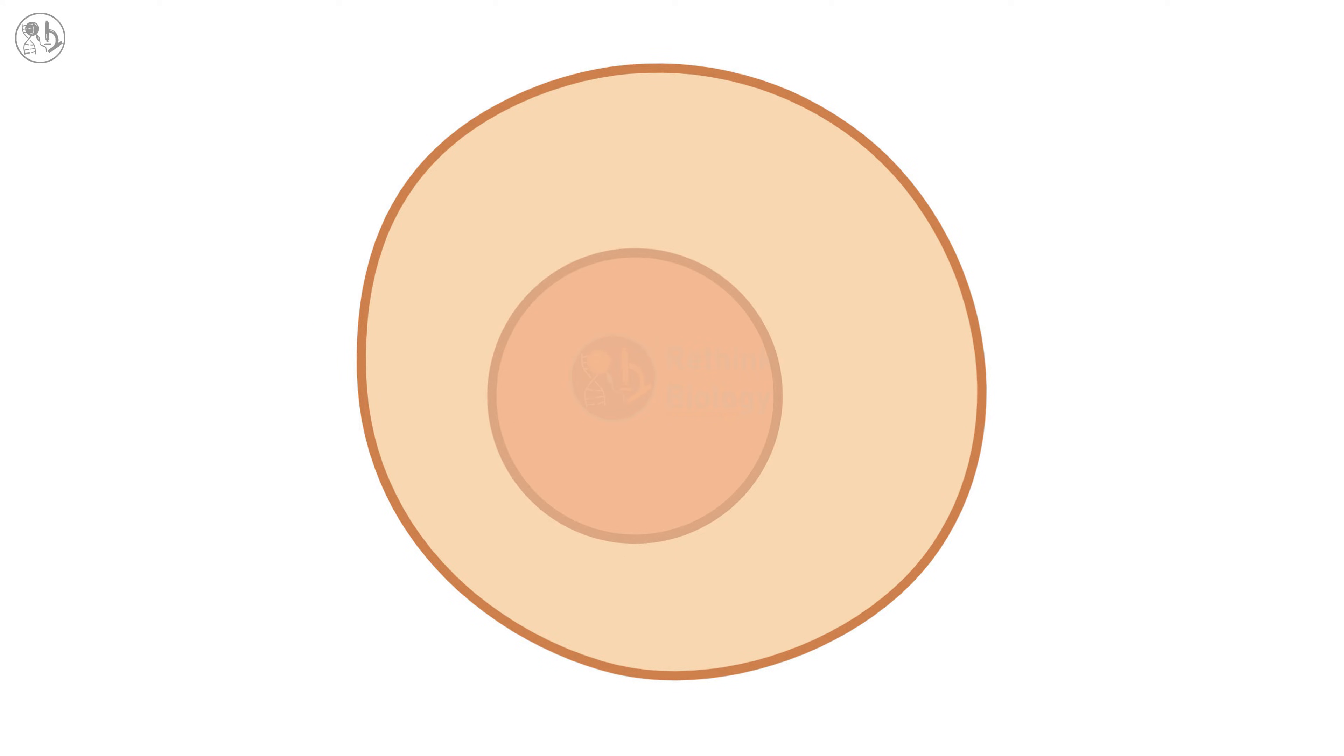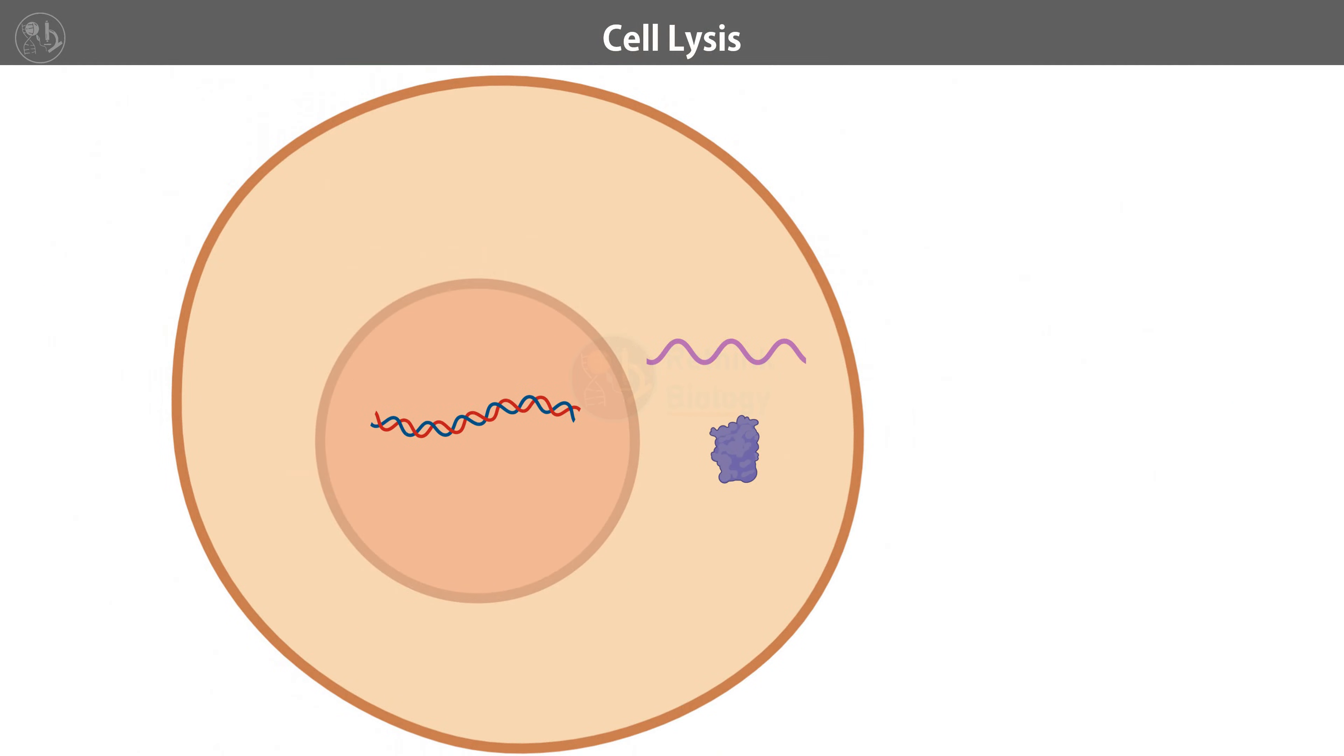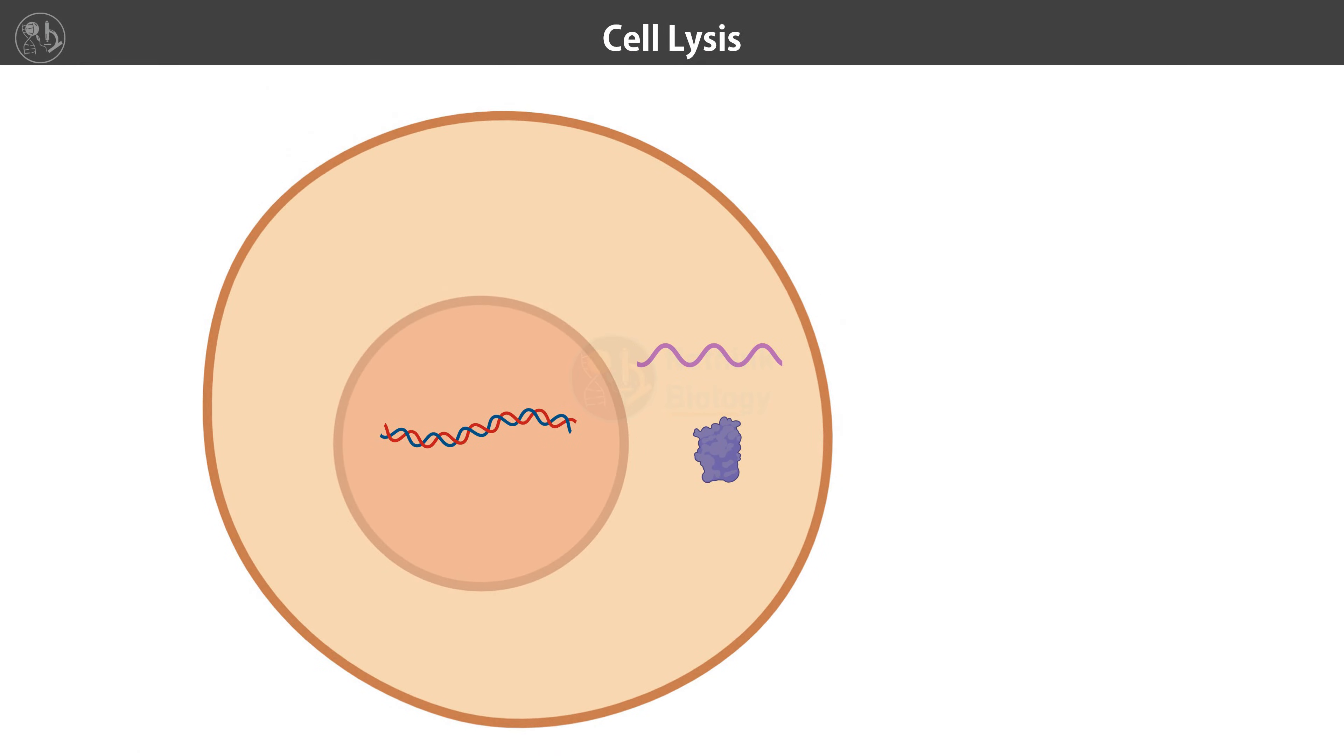Our journey begins inside the living cell, where RNA molecules act as messengers carrying instructions from DNA to build proteins. To study RNA, we first need to isolate them. First, cells are lysed to release RNA using a solution called Trizol. Trizol is a solution of phenol and guanidinium